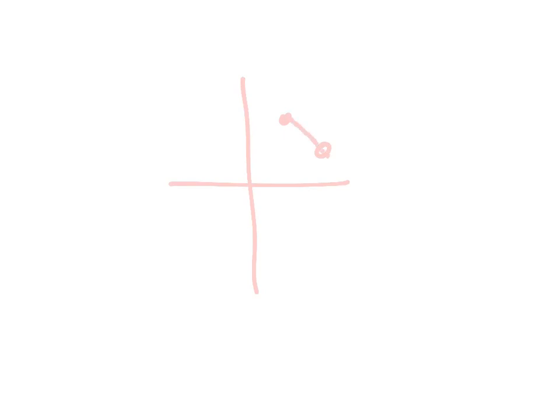So now you should be able to, if I give you a graph and two points, find the length of the line segment between those points by drawing in a right triangle and using the Pythagorean theorem. That was your learning goal for today. If you have questions, please let one of your teachers know.